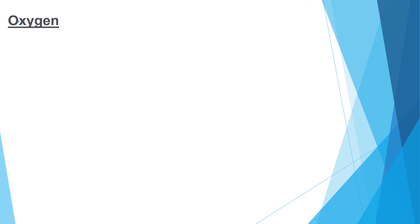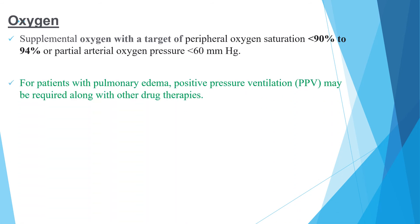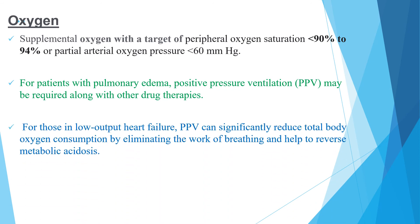Regarding oxygen, supplemental oxygen targeting peripheral oxygen saturation up to 94% or partial arterial oxygen pressure of up to 60 mmHg may be needed. For patients with pulmonary edema, positive pressure ventilation may be required along with other drug therapies. For those in low-output heart failure, positive pressure ventilation can significantly reduce total body oxygen consumption by eliminating the work of breathing and help to reverse metabolic acidosis.